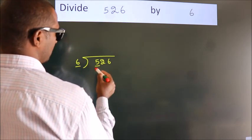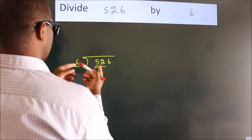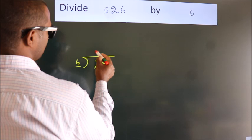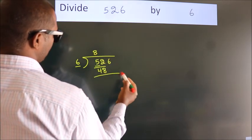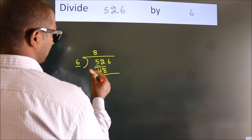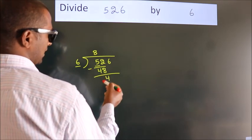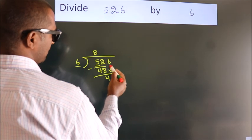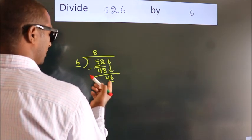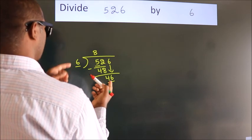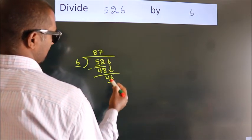So we should take two numbers: 52. A number close to 52 in the sixth table is 6 times 8 equals 48. Now we should subtract, we get 4. After this, bring down the beside number, so 6 down, so 46. A number close to 46 in the sixth table is 6 times 7 equals 42.